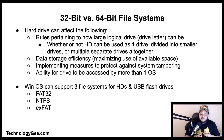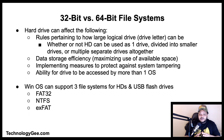When utilizing Windows operating systems, the type of file system a user utilizes for a hard drive can affect the following: rules pertaining to how large a logical drive or drive letter can be, whether the hard drive can be used as one drive or divided into several smaller drives, or whether the hard drive must be multiple separate drives altogether. It also affects data storage efficiency, implementing measures to protect a system from tampering, and the ability of a drive to be accessed by more than one operating system. Windows operating systems can support three types of file systems for hard drives and USB flash drives: FAT32, NTFS, and exFAT.